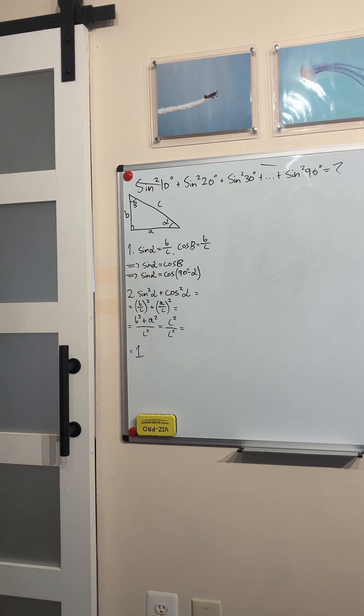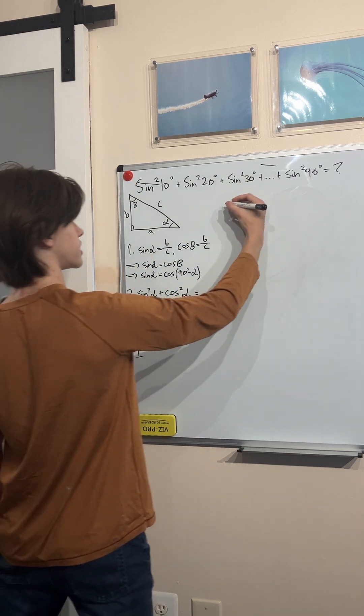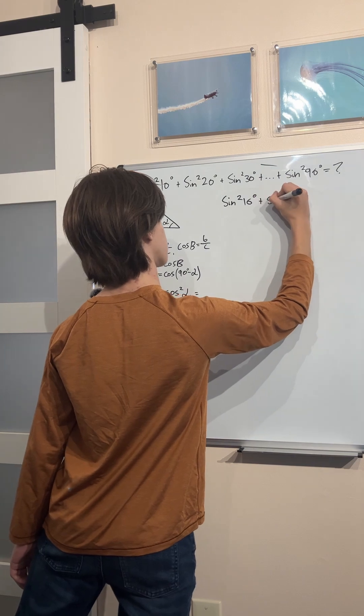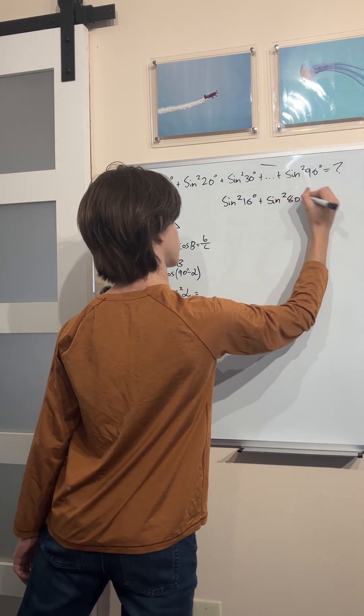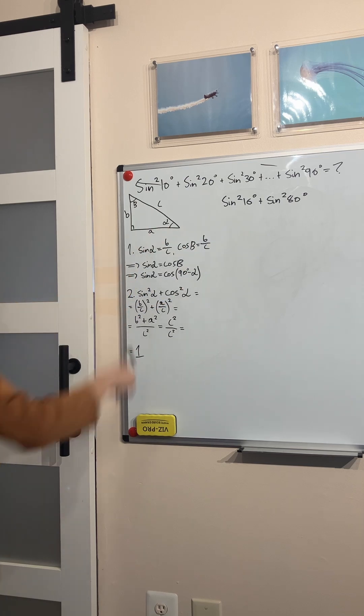And now this problem should be really easy. Let's look at it from two sides here. Let's say you have the sine squared of 10 degrees plus the sine squared of 80 degrees. That is hidden inside this sum, from opposite sides of the sum.